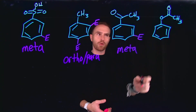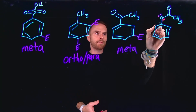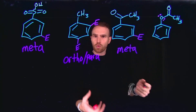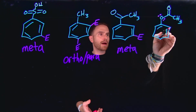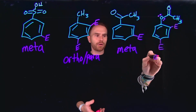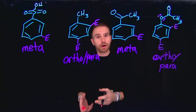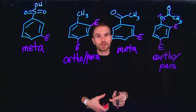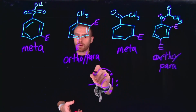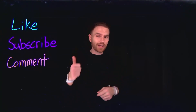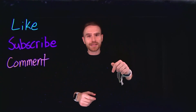For an ester group attached to benzene, the oxygen atom has two lone pairs in p orbitals, which can donate in a pi-symmetrical fashion into the benzene ring's pi system, making it an ortho and para director. When evaluating substituents, check whether they are electron-withdrawing or electron-donating, and whether there are pi electrons or lone pairs available to donate — such as halogens, which have lone pairs that can donate in a pi fashion.